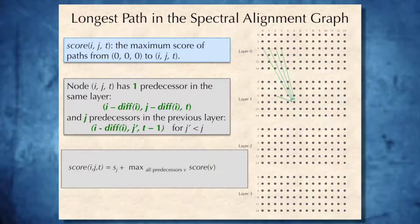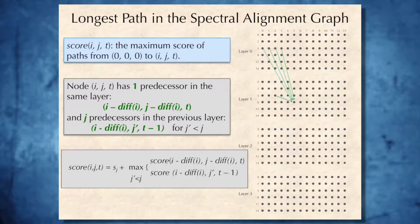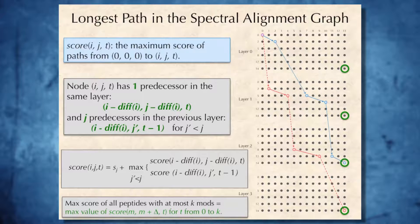Scorer, therefore, of ijt can be defined as amplitude in the spectral vector j plus maximum over all predecessors score of this predecessor. To be more precise, we will use the diff array to specify the exact element of this recurrence. And, of course, maximum scorer of all peptide with at most K modifications is simply maximum value of scorer m, m plus delta t for all possible t, represented by green nodes in this graph.